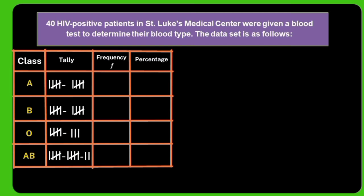Based on the percentage of each blood type, let's answer the following questions. Question 1: What is the total number of HIV-positive patients? The answer is 40. Question 2: Which blood type has the lowest percentage? Blood type O. Question 3: Which blood type has the highest percentage? Blood type AB. Question 4: Which blood types have the same percentage? Blood type A and blood type B both have 25%.